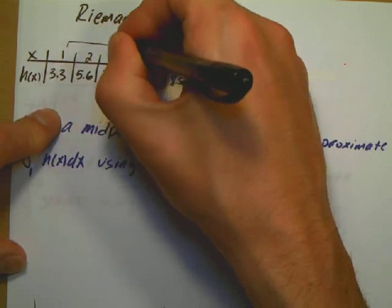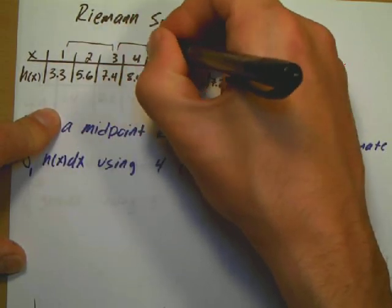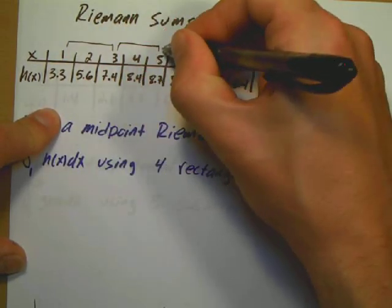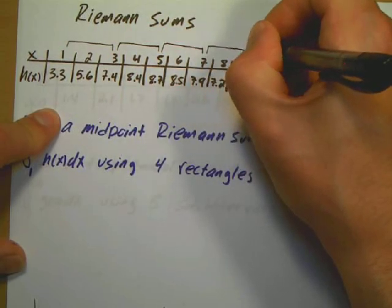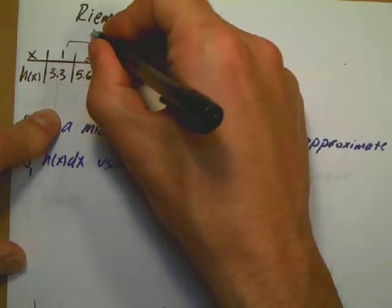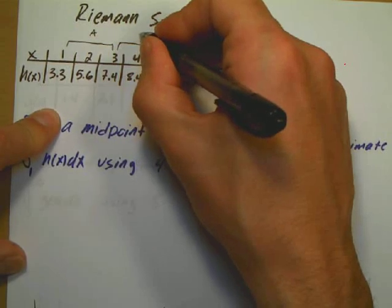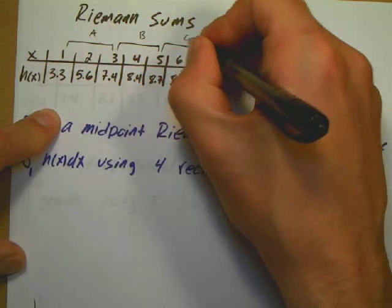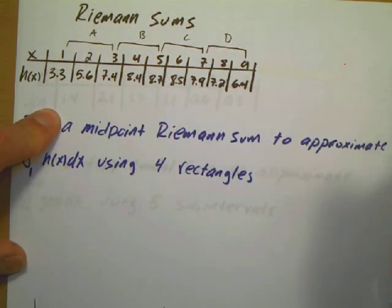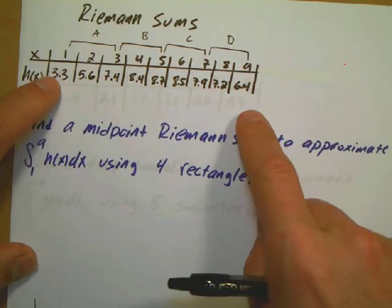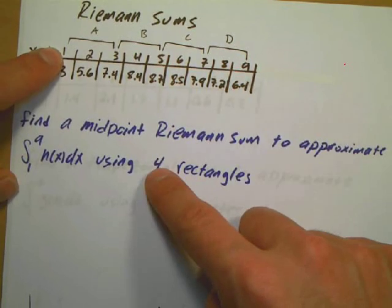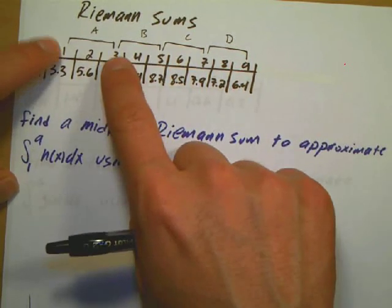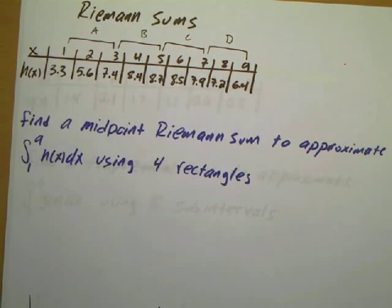I'll be using intervals from one to three, three to five, five to seven, and seven to nine. So I can think of these as my separate rectangles: A, B, C, and D. Another way to look at it: from one to nine there are eight units, and splitting into four means counting by two — so one to three, three to five, and so on.